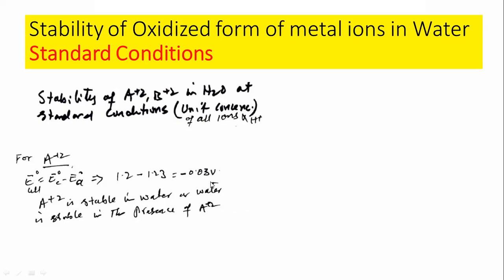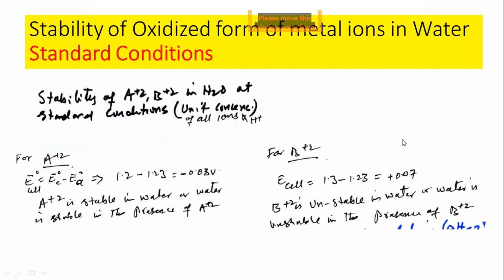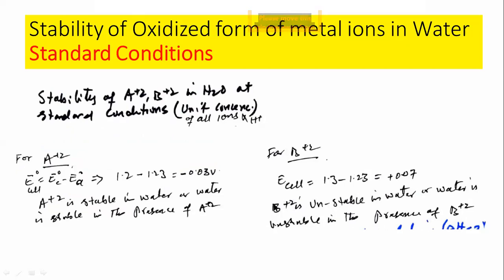For B²⁺, the potential is 1.3 V, and the water half cell remains at 1.23 V at the anode. The cell potential is 1.3 minus 1.23 = plus 0.07 V. This is a spontaneous reaction, meaning when you dissolve B²⁺ in water it will react with water. B²⁺ is unstable in water, and it will convert into B⁺. So it is a spontaneous reaction at standard conditions.